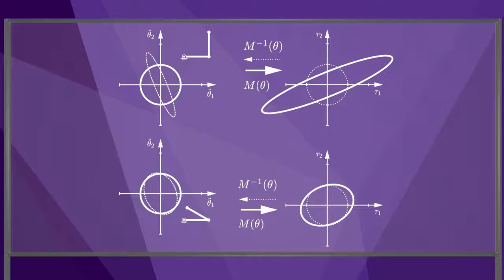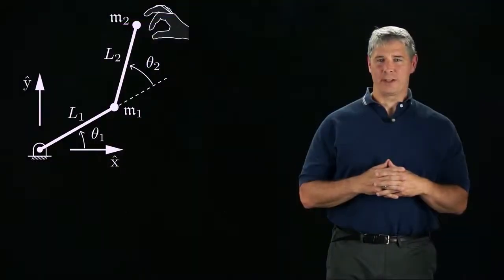Since these ellipses are in joint torque and acceleration space, they are not easy to understand intuitively. Instead, imagine that you grab the endpoint of the robot and you feel how massy it is when you move it in different directions.